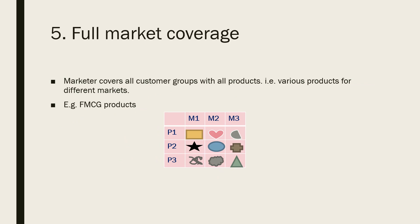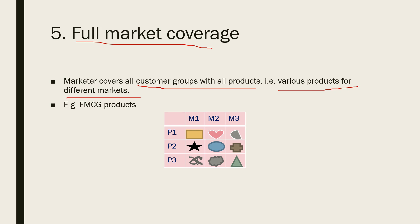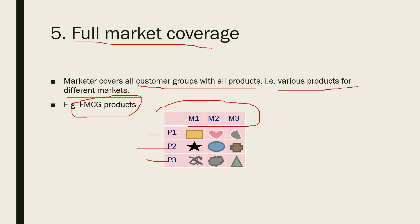The last type is full market coverage. Here the marketer covers all customers with all the products — that means various products for various markets. For example, FMCG goods: there are various types of products sold in various types of markets.